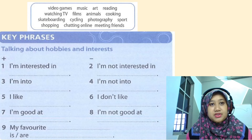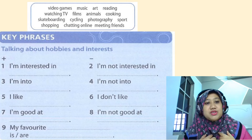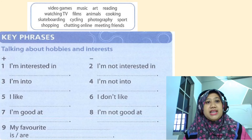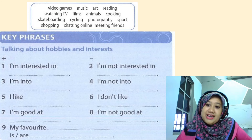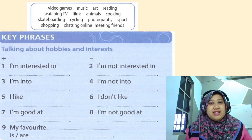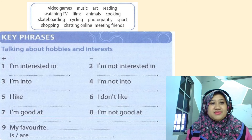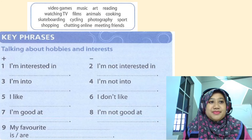So what you have to do: record yourself using your mobile phone, laptop, or tablet. Start by saying: Hello, I'm [name]. I'm from 5UM. Today I'm going to talk about my hobbies and interests. I'm interested in music. I'm not interested in art. I'm into playing the guitar. I'm not into playing the violin. I like skateboarding. I don't like cycling. I'm good at sport. I'm not good at video games. My favourite sport is badminton. Or: my favourite sports are badminton and basketball.